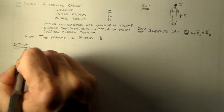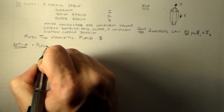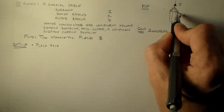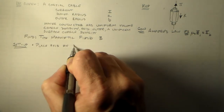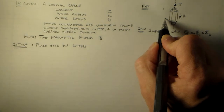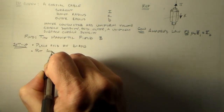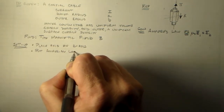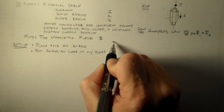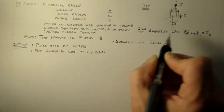For our setup, the easiest thing is to start by placing the axis — that's the whole reason why we use the word 'coaxial', because both of these conductors have the same axis — along the Z-axis. We'll put our Amperian loop in the XY plane when we get there.